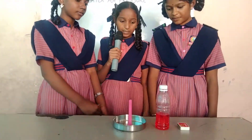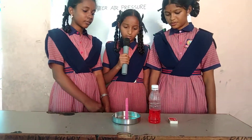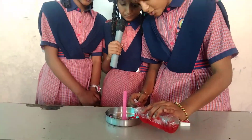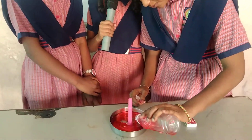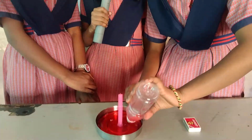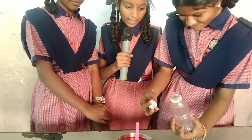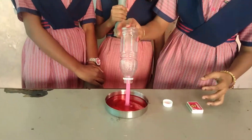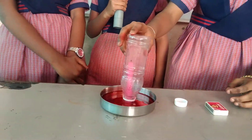First, take one plate and take one candle. Put the candle in the plate. Pour the water in the plate. After pouring the water in the plate, we will cover the candle — the water is not coming out.